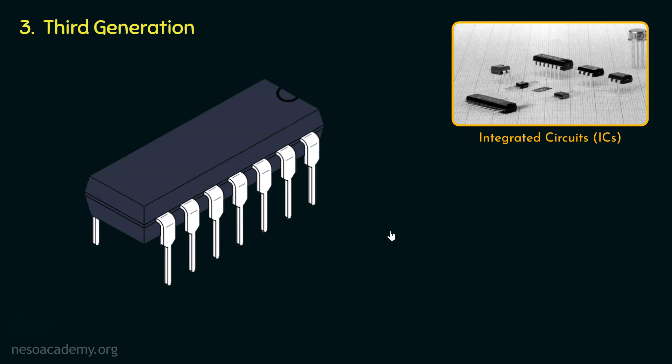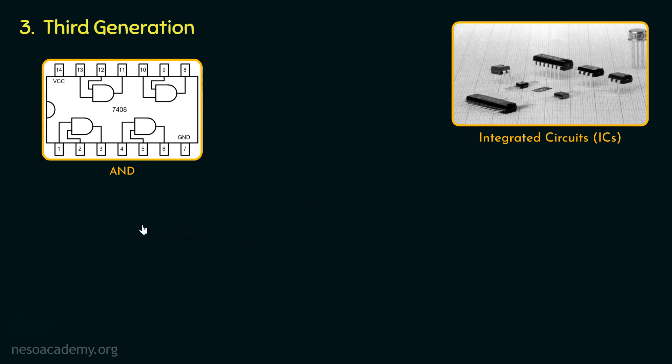I just told you the most important factors of integrated circuits is its miniaturization. Let me explain what I mean by that using the IC for AND gate. The IC for AND gate is numbered as 7408.